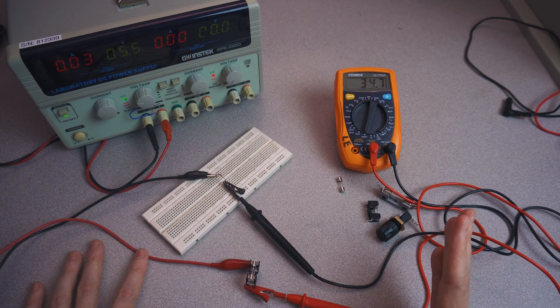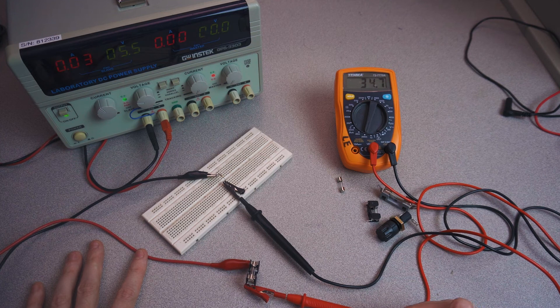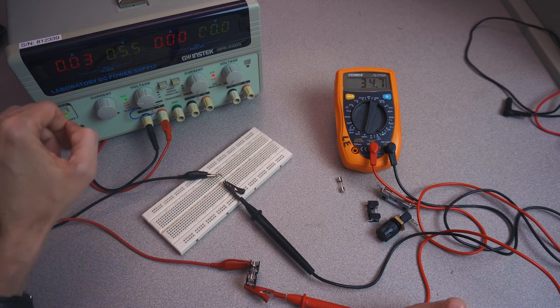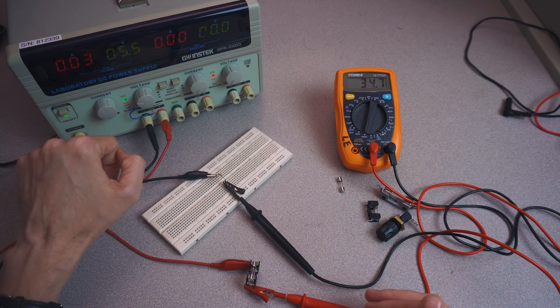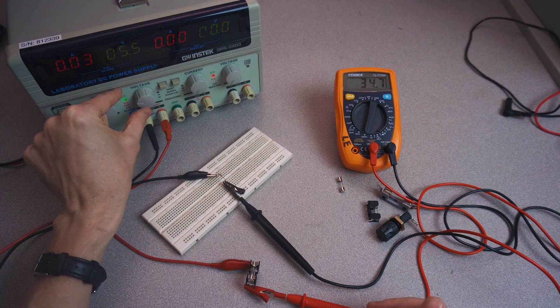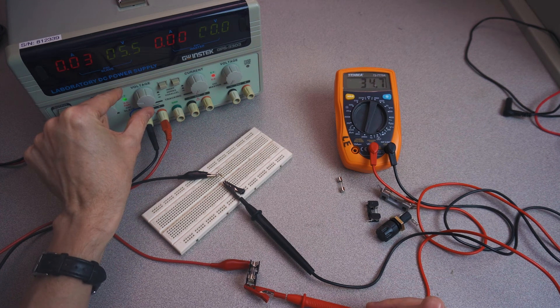By the way, when you actually use a fuse in a circuit, you shouldn't use a fuse that's rated right at the maximum amount of current that your circuit should use. You should probably choose a fuse that's a little bit higher than that in order to prevent nuisance blowing. Sometimes circuits can have power spikes, for example.